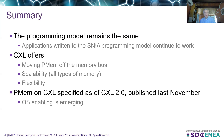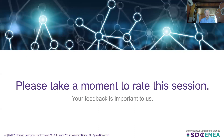In summary, the programming model remains the same. If you've written an application for today's persistent memory, it will work without modification and without recompiling on CXL-attached persistent memory. We made sure to preserve the programming model. CXL offers the ability to move persistent memory off the memory bus and scale it up in a much more flexible way. The details are all published in the public CXL 2.0 spec available on the CXL website, and OS enabling is emerging right now. Thanks for listening.